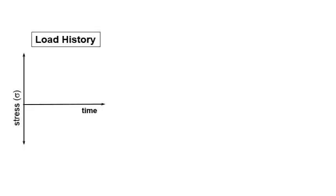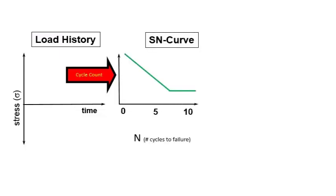To see how this works, you need at least two things. You need a load time history, so this would be stress versus time, and you can cycle count this and find how many alternating stress cycles are present in the time history. You then apply that to an S-N curve for the material that your product is made out of.